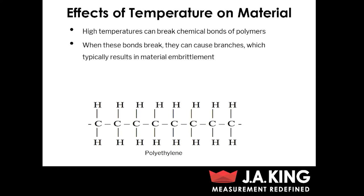High temperatures can actually break chemical bonds of polymers. You can see polyethylene at the bottom of the screen — at a high temperature, you can have a bond break between a carbon and hydrogen atom. And when that bond breaks, it actually releases free radicals. When the free radicals are released, you can actually have branching off of that chain, and that branching eventually is going to cause permanent material embrittlement.